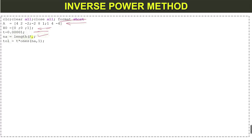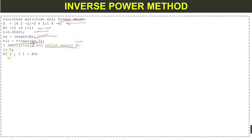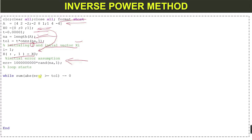NA is set to the length of matrix A — this is used to create a column vector of the same size as A. Next we initialize the number of iterations and the initial vector: when i = 1 (first iteration), the vector is x-naught. After that we set the initial error assumption.